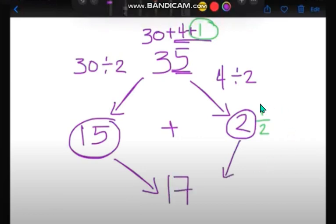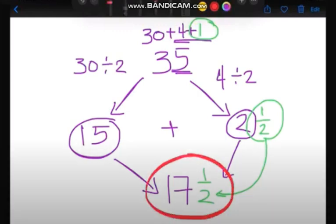Now, what are we going to do with this one? Simple. We are just going to copy. So we are going to write only half, copy it on this side. Now we have our final answer, 17 and a half. So this is our final answer. What is half of 35? It's 17 and a half.